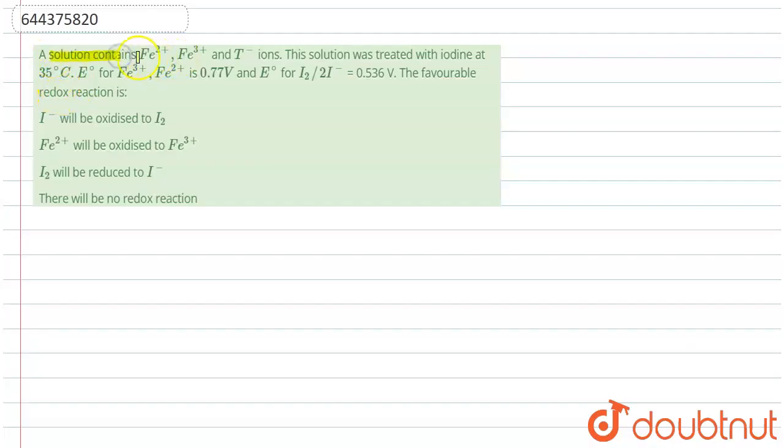It is given that a solution containing Fe2+, Fe3+, and I- ions is treated with iodine at 35 degrees Celsius. Standard potential values are: Fe3+ to Fe2+ is 0.77V, and I2 to 2I- is 0.53V. We have to determine the favorable redox reaction.